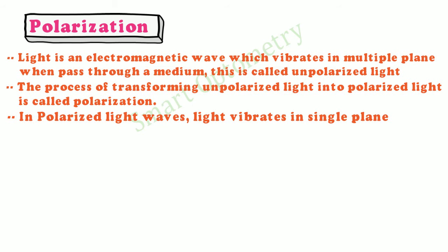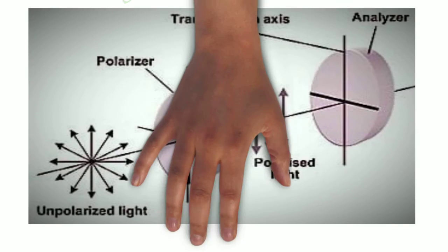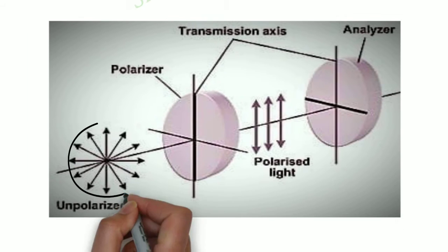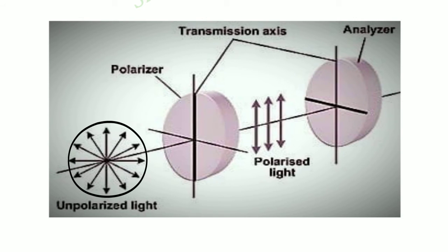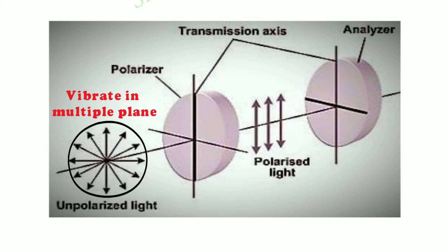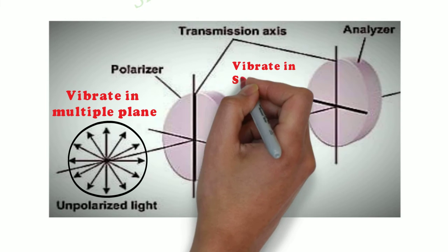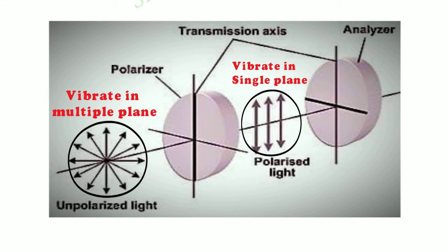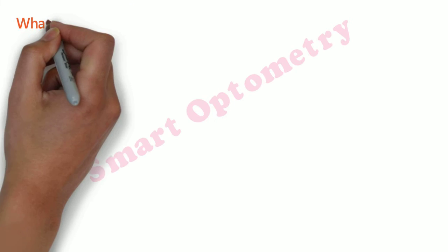In polarized light, waves vibrate in a single plane. Here in this figure, this is unpolarized light in which the light vibrates in multiple planes, and this is polarized light after passing through the polarizer, which vibrates in a single plane.